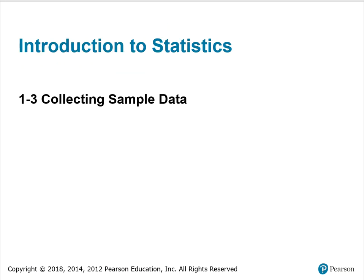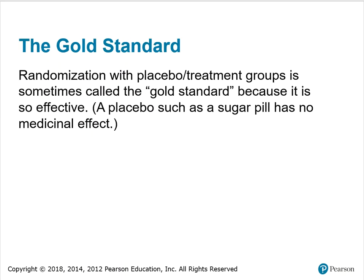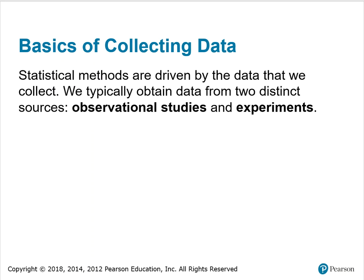Chapter 1 Introduction of Statistics, 1.3 Collecting Sample Data. The method used to collect sample data influences the quality of the statistical analysis. Of particular importance is the simple random sample. If sample data are not collected in an appropriate way, the data may be so utterly useless that no amount of statistical torturing can salvage them. Randomization with placebo treatment groups is sometimes called the gold standard because it is so effective. A placebo, such as a sugar pill, has no medicinal effect.